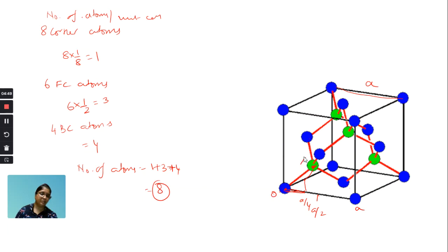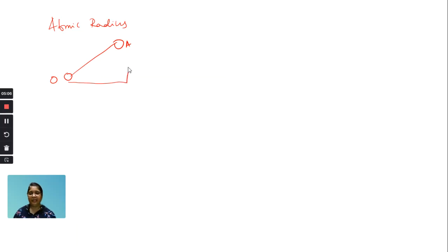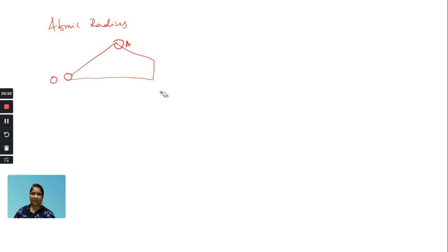Let's call the corner atom O and the body-centered atom E (or A). This is the atomic radius. O is at the origin. The body-centered atom is at coordinates A/4 along X-axis, A/4 along Y-axis, A/4 along Z-axis. The distance between these two touching atoms equals 2R (R plus R). Using 3D geometry with a triangle, we derive the atomic radius.